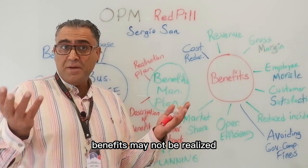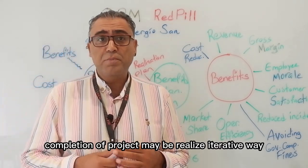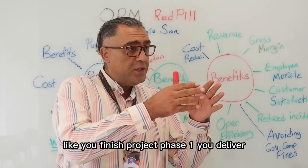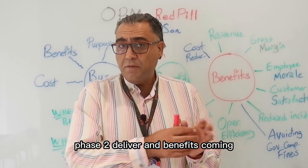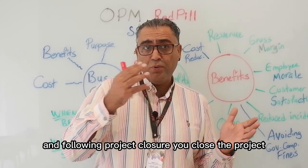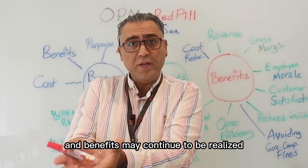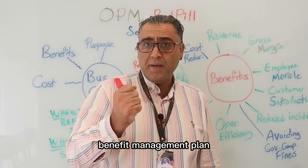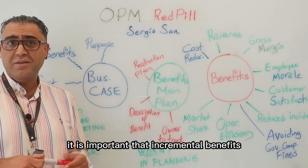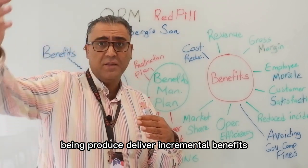Benefits may not be realized until completion of the project — you need to deliver, you need to finish the project first. Maybe they are realized in an iterative way: you finish phase one, deliver, phase two delivers, and benefits come — you can see them iteratively. And following project closure, benefits may continue to be realized. The benefit management plan helps to track benefits realization milestones and incremental benefits being produced.